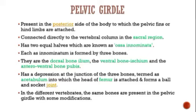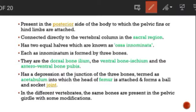Hello, dear students, welcome to another video lecture on comparative anatomy of vertebrates. In our previous lecture we discussed the pectoral girdle. Today we will talk about the pelvic girdle, which is commonly called the hip bone or coxal bone, because it is present in the hip region. Like the pectoral girdle, it acts as an intermediary between the appendicular skeletal and axial skeletal.